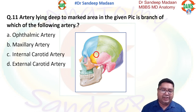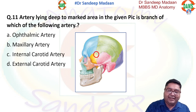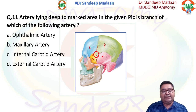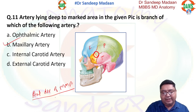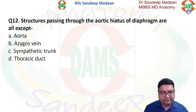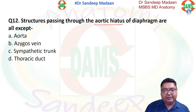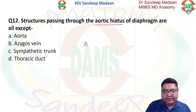This is a favourite question for examiners — the pterion. The pterion is a junction of four bones: the frontal bone, the parietal bone, the temporal bone, and the sphenoid bone. This H-shaped junction is called the pterion. Deep to it lies the anterior division of the middle meningeal artery, which is a branch of the maxillary artery and is the most common cause of extradural hemorrhage.